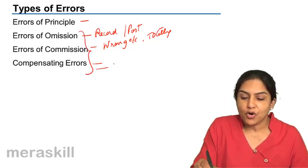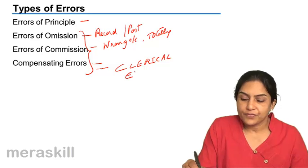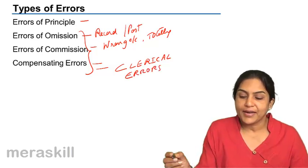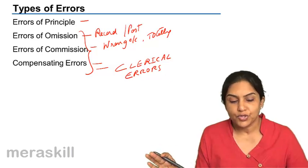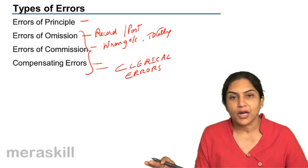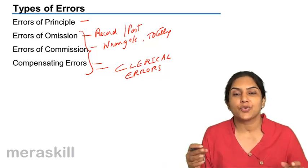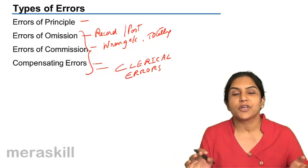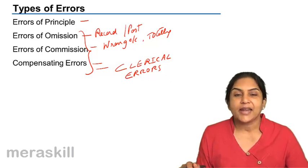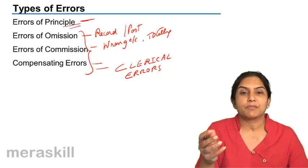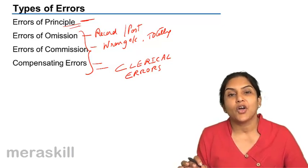These three errors — omission, commission, and compensating errors — are also called clerical errors. Basically, errors may be clerical errors or non-clerical errors. Errors of omission occur when you omit an entry either to record or to post. Errors of commission include wrong totalling, wrong account, wrong amount, etc. Compensating errors occur where multiple errors cause the debit and credit totals to coincidentally tally. An error of principle, where you need to know the rules and principles behind posting to particular accounts, is a non-clerical error.